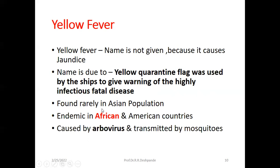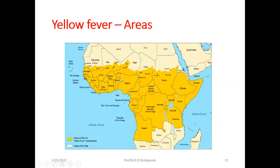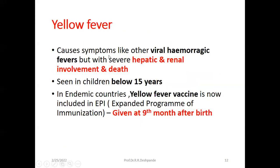Yellow fever is found rarely in the Asian population. It is endemic in Africa and American countries, caused by an arbovirus and transmitted by the Aedes mosquito. The map shows endemic areas including Ethiopia, Sudan, and Nigeria. Yellow fever causes symptoms like other viral hemorrhagic fevers but with severe hepatic and renal involvement and death. It is more commonly seen in children below 15 years. In endemic countries, the yellow fever vaccine is included in the Expanded Program of Immunization (EPI) and is given at the 9th month after birth.